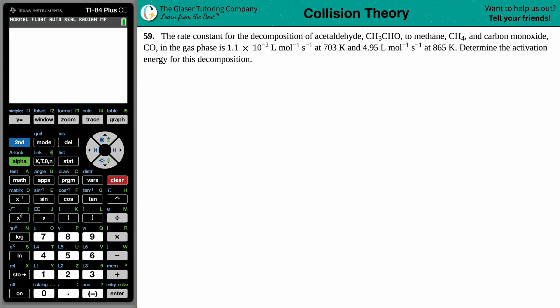Number 59, the rate constant for the decomposition of acetaldehyde, CH3CHO, to methane, CH4, and carbon monoxide, CO, in the gas phase is 1.1 times 10 to the negative second liters per mole per second at 703 Kelvin, and 4.95 liters per mole per second at 865 Kelvin. Determine the activation energy for this decomposition.